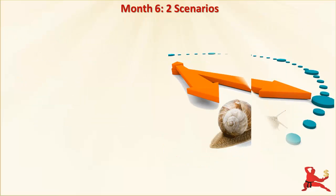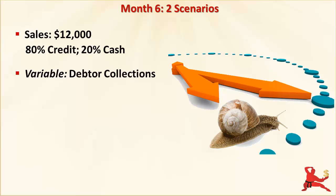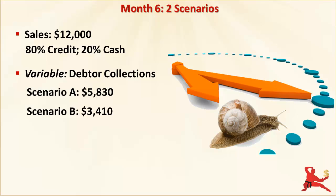First, let's develop two different scenarios for month 6. We'll assume that sales are $12,000 this month and keep the 80-20 credit to cash sales mix. The difference between the two scenarios will be in debtor collections. For Scenario A, debtor collections will be $5,830. For Scenario B, we'll have some slow paying debtors and reduce collections down to $3,410.